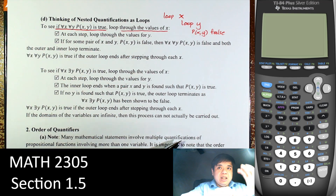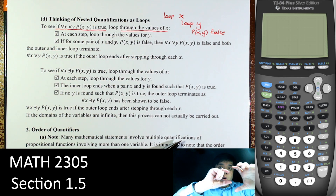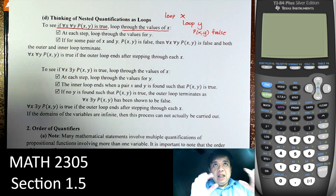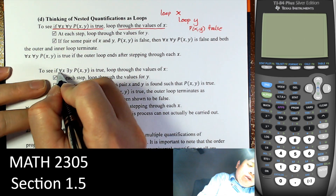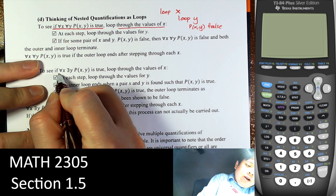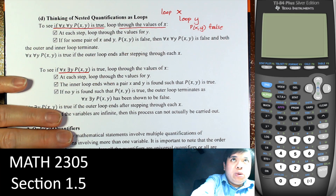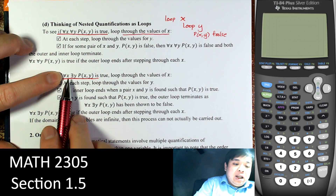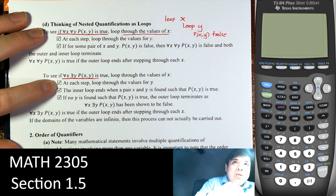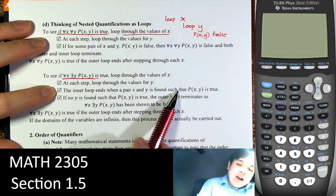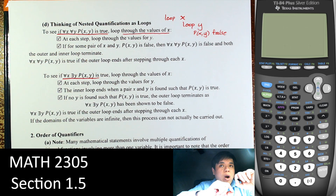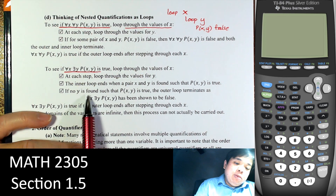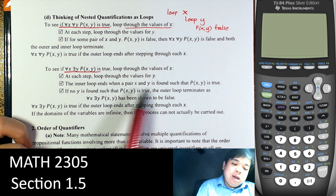Now the other way: if we have for every x, there exists a y such that P(x,y) is true. Again, we go for every x, and when we find a y that works, we get out of that inner loop. The inner loop ends when the pair x, y is found. So if we find one value for y, we do not need to go through all the values of y — we just go to the next loop for x. If no y is found for a given x, the outer loop terminates and the statement is false.